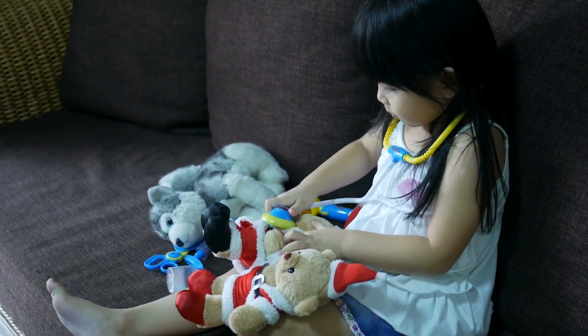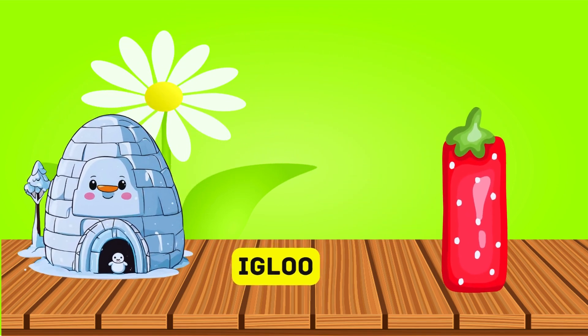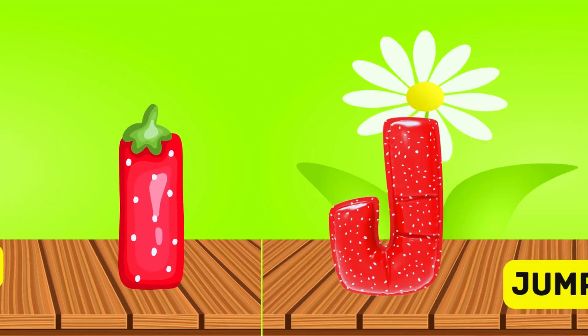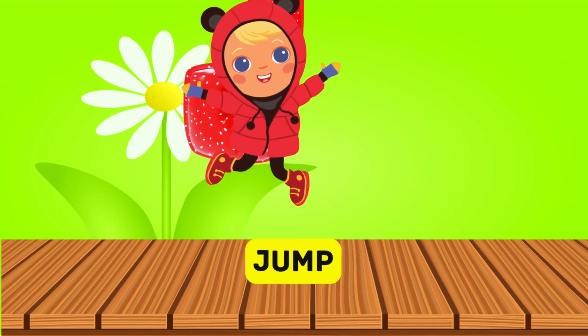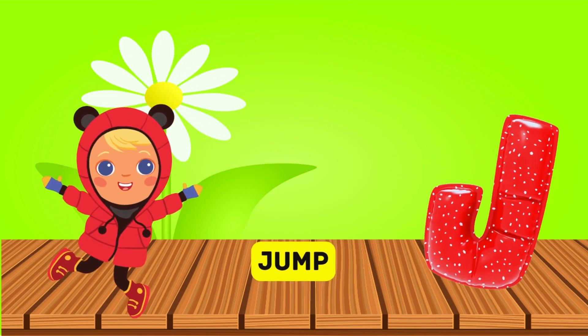I is for igloo, i-i-igloo. J is for jump, j-j-jump.